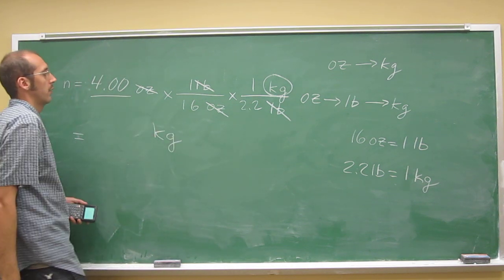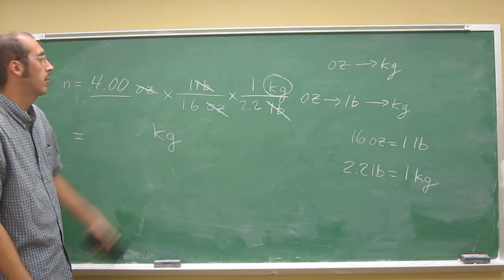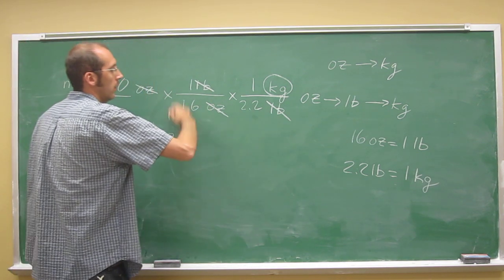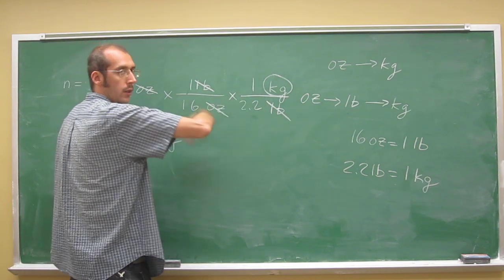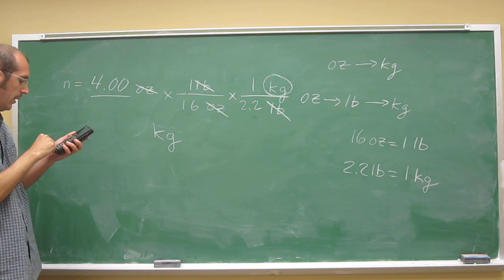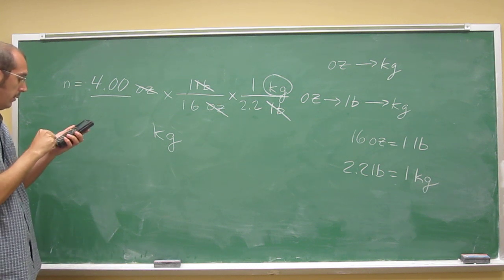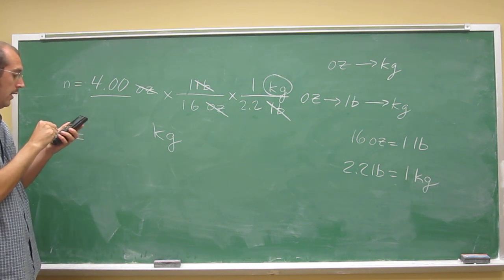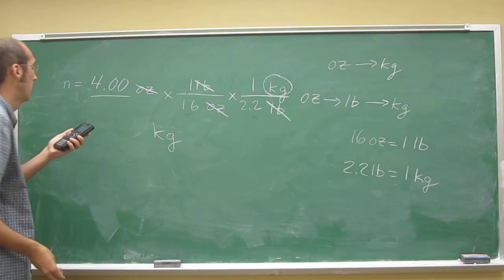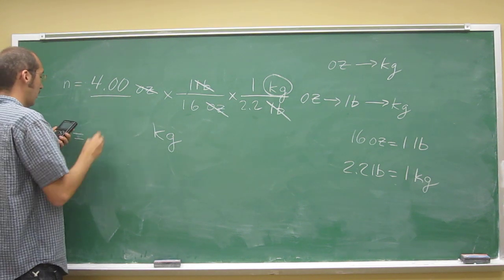Remember, we only use the significant figures in the number that's given to us. So that's 3, 2, 2. We don't even worry about that. 1, 1. We don't even worry about those conversion factors. So 3 sig figs. So we say 4 divided by 16 and then divide that by 2.2.